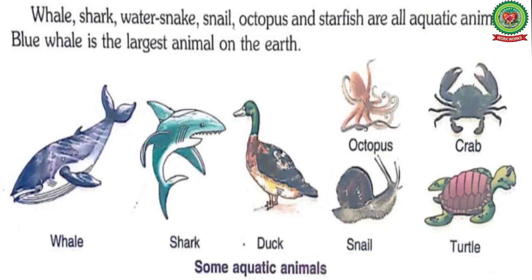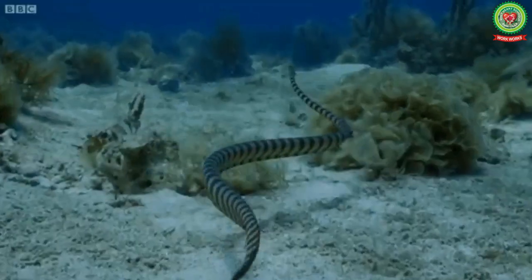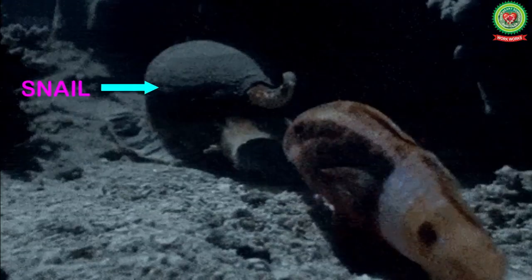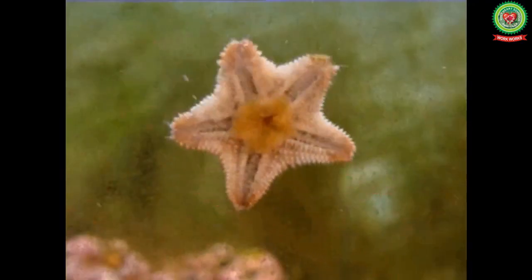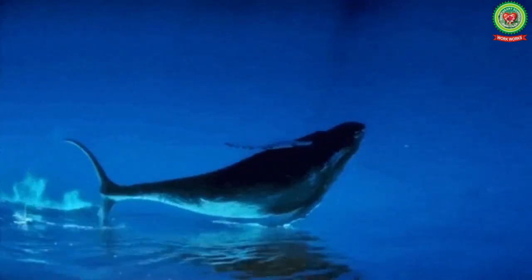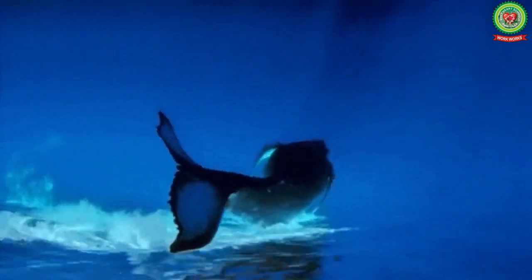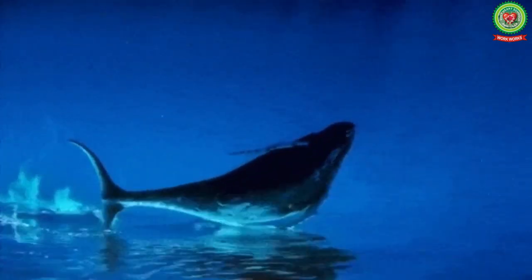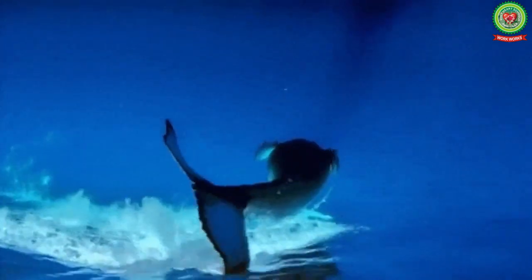The examples of aquatic animals are whale, shark, water snake, snail, octopus, and starfish. Blue whale is the largest animal on the earth. So which is the largest animal on the earth? The answer is blue whale.